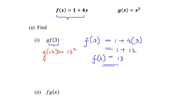So the x is being replaced. 13 square gives us a value of 169. So we get the total value of the two functions g(f(3)) as 169.